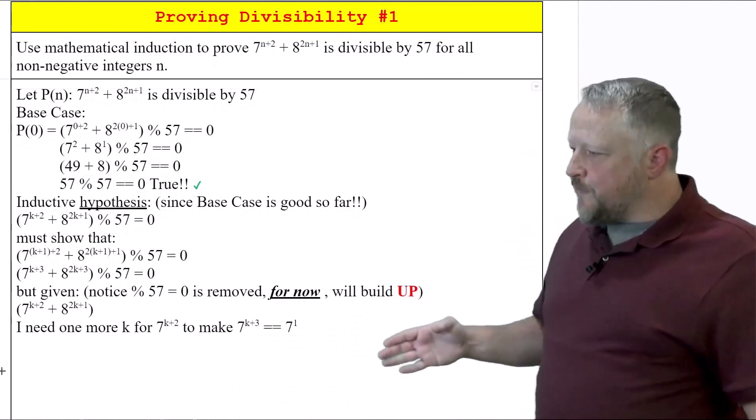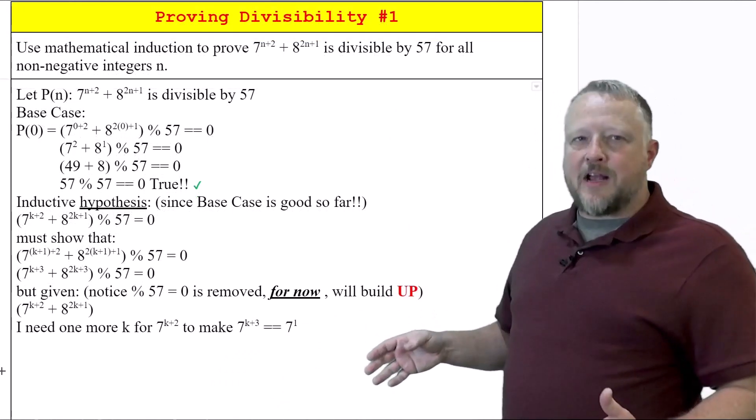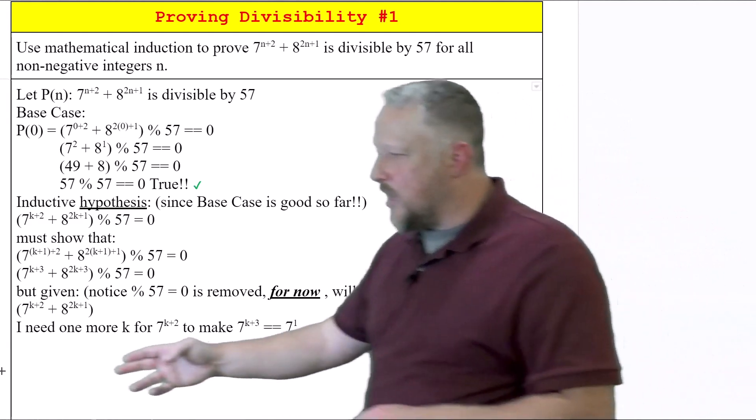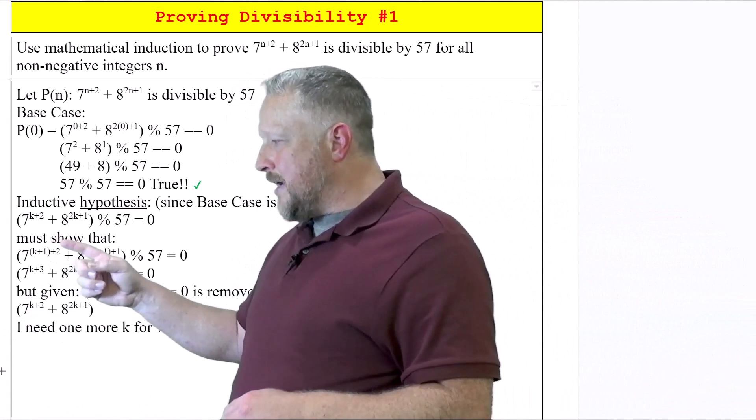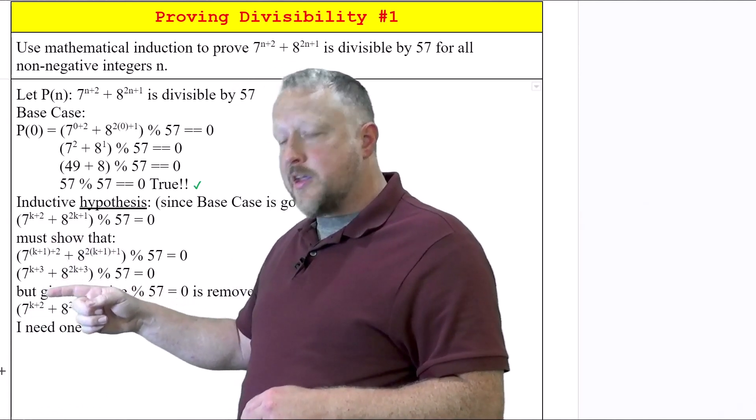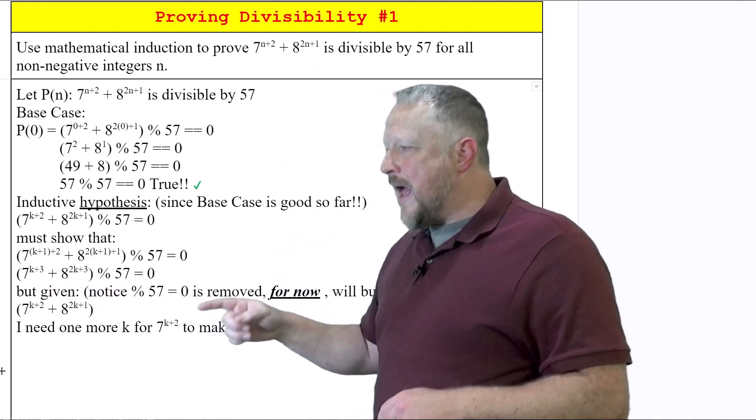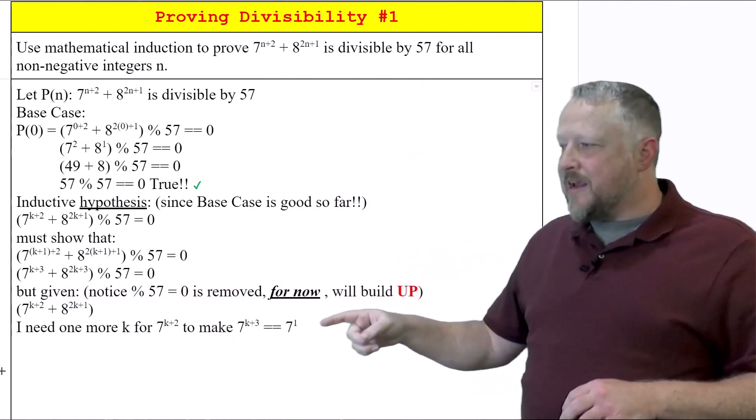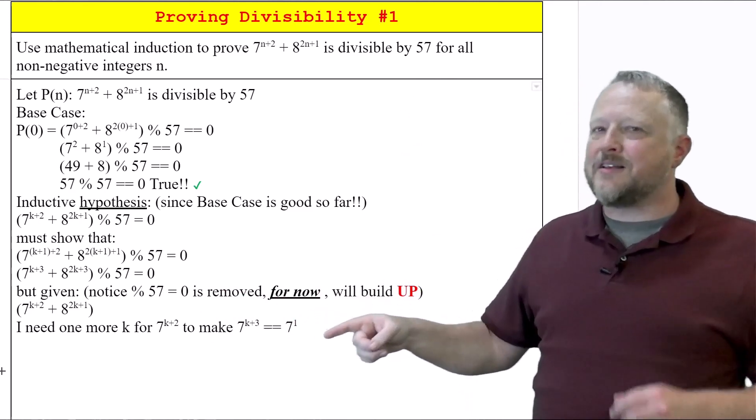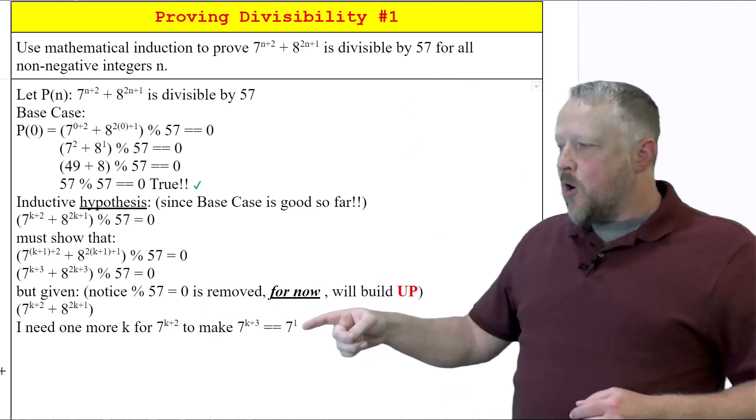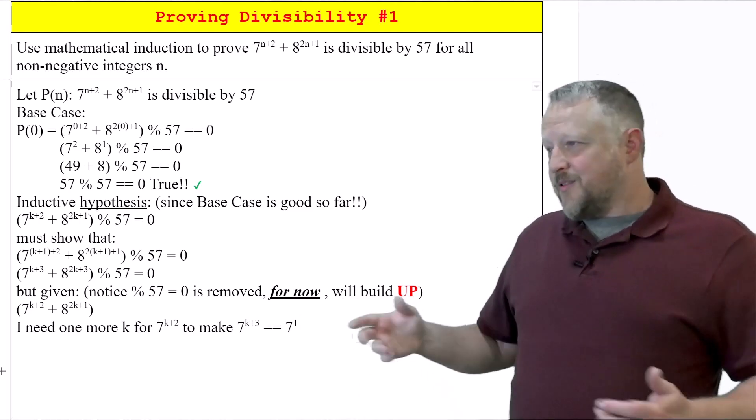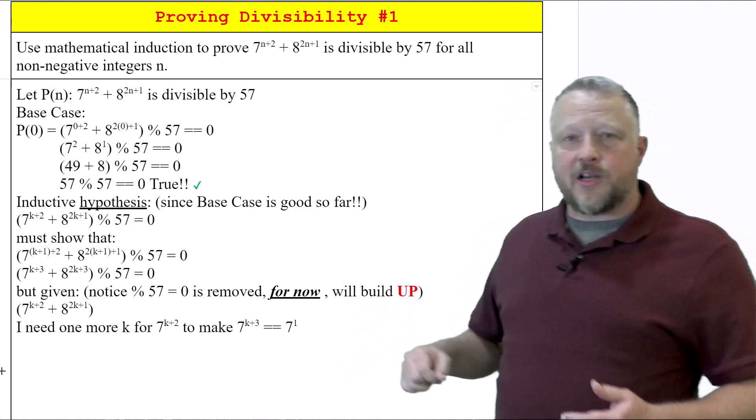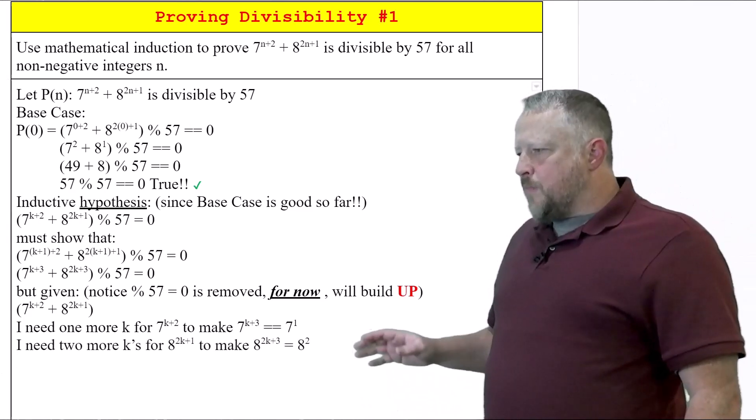So how am I going to do that? Well, first, I need to worry about the left-hand side first. For the left-hand side, I already have 7^(k+2), but I need to have 7^(k+3). So how am I going to do that? I'm going to add one more k. How do I add one more k to make 7^(k+3)? Well, there's that darn exponent property again. All I need to do is add a 7 to the first power, just 7 by itself, in order to go ahead and do that. So let's take a look at what that looks like.